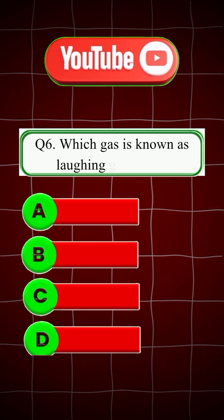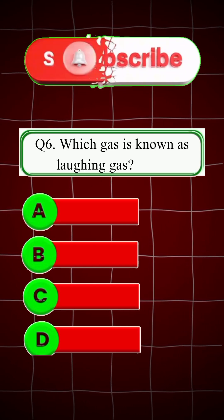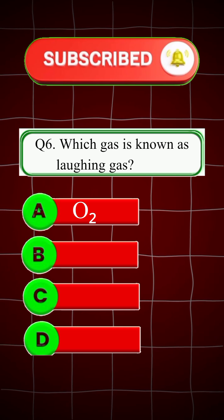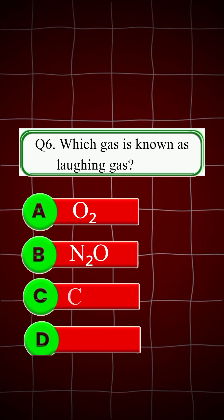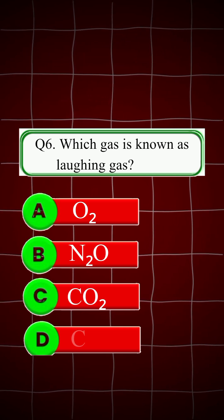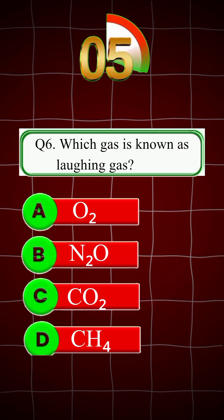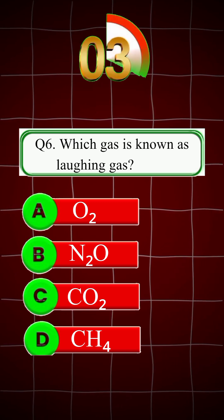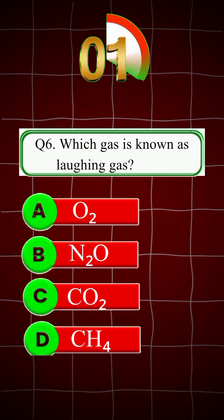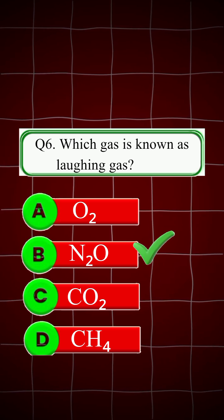Question 6: Which gas is known as laughing gas? A. O2, B. N2O, C. CO2, D. CH4. Right answer is B, N2O.